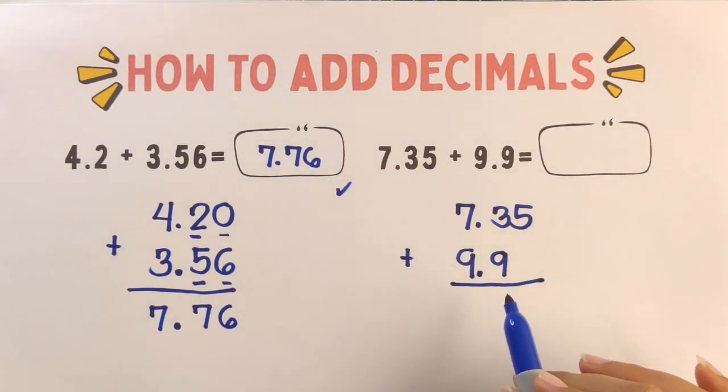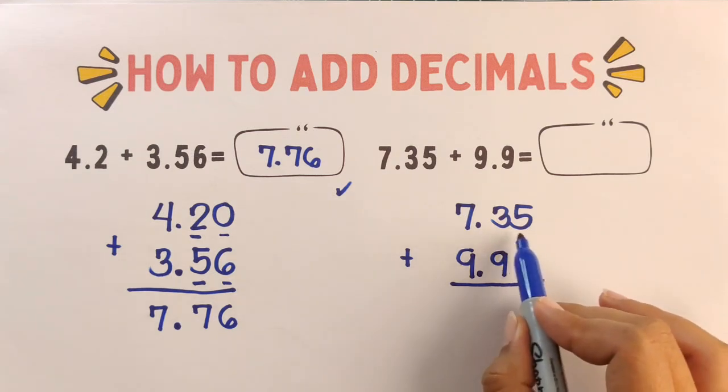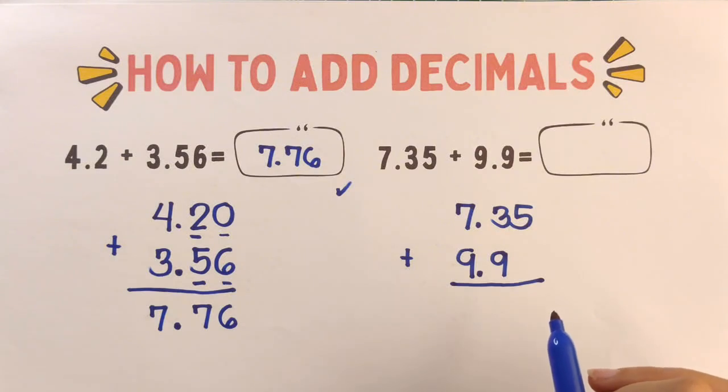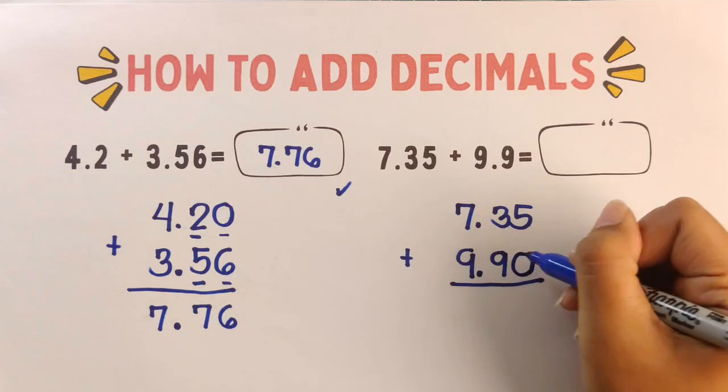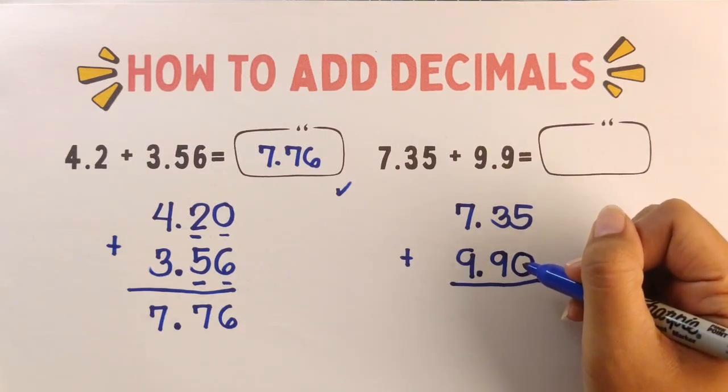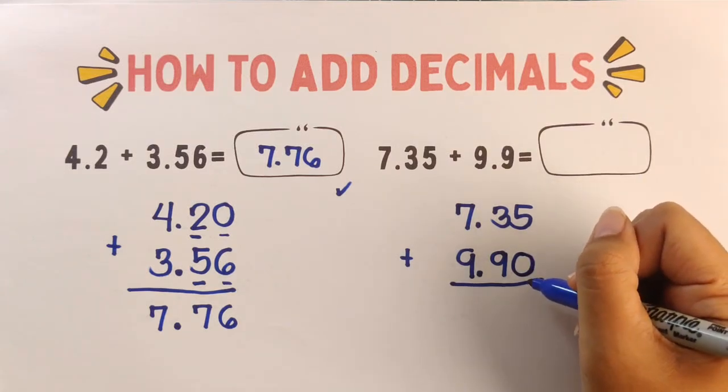Now notice 9.9 only has one decimal place and 7.35 has two. To make it easier, let's add a zero to the end of 9.9 to make it 9.90. This helps us match the decimal places.